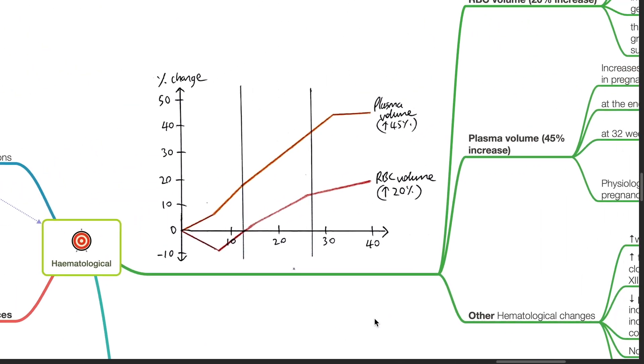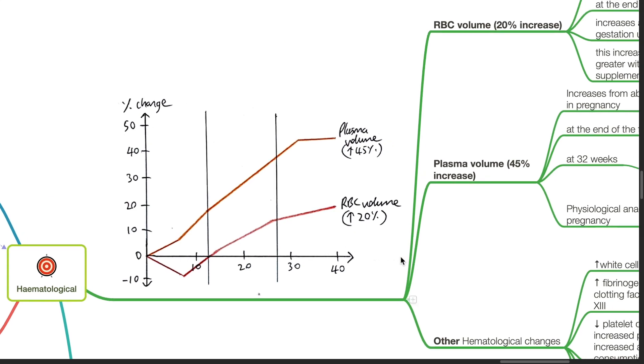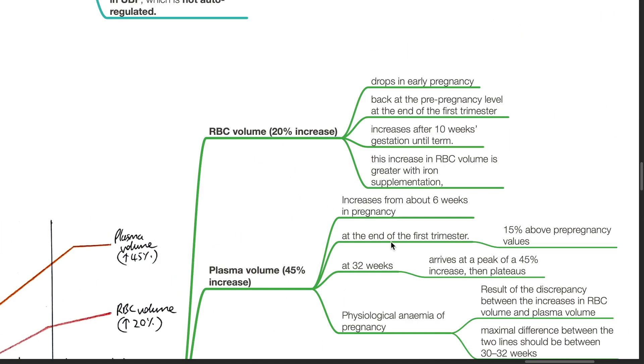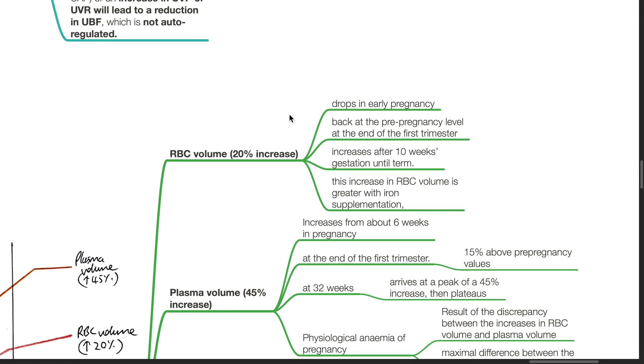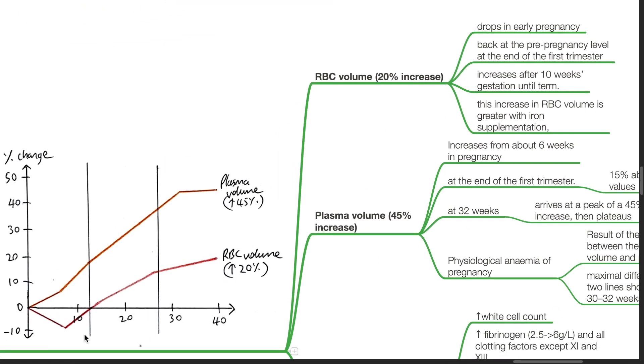This graph shows that RBC volume increases by 20% and plasma volume increases by 45% from early to late pregnancy. RBC volume increases by 20%. It drops in early pregnancy, is back at the pre-pregnancy level at the end of the first trimester, and increases after 10 weeks gestation until term. This increase in the RBC volume is greater with iron supplementation.